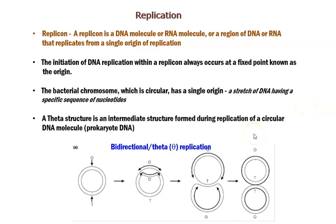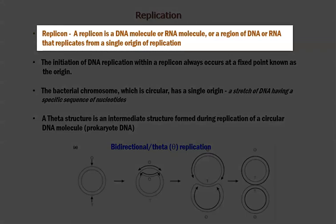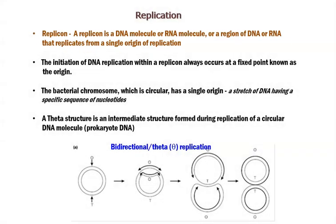First, we look at the points related to the theta replication model, which is also referred to as bidirectional replication. Before going into the explanation, we look at the definition of what is meant by a replicon. A replicon is a DNA molecule or an RNA molecule, or even a small portion of a DNA or RNA molecule, that replicates from a single origin of replication.